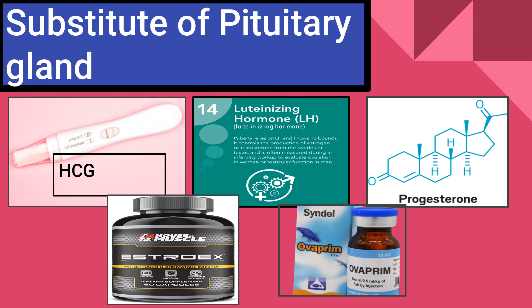If the pituitary gland is not available, we can use substitutes. The substitutes for the pituitary gland include hCG (human chorionic gonadotropin), luteinizing hormone (LH), progesterone, and estrogen. These substitute substances can be used in place of the pituitary gland extract.